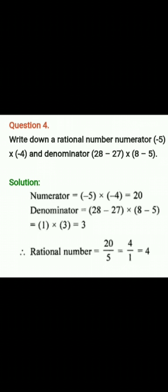Solution: Numerator equals (-5) × (-4) = 20. Denominator equals (28 - 27) × (8 - 5) = 1 × 3 = 3. Therefore, the rational number is 20/3.